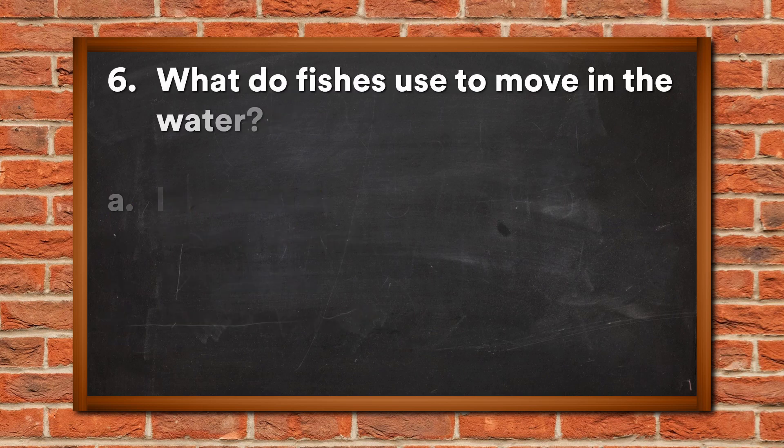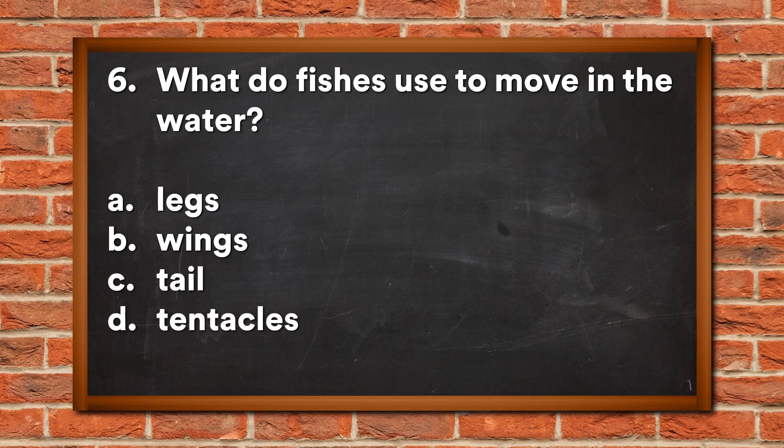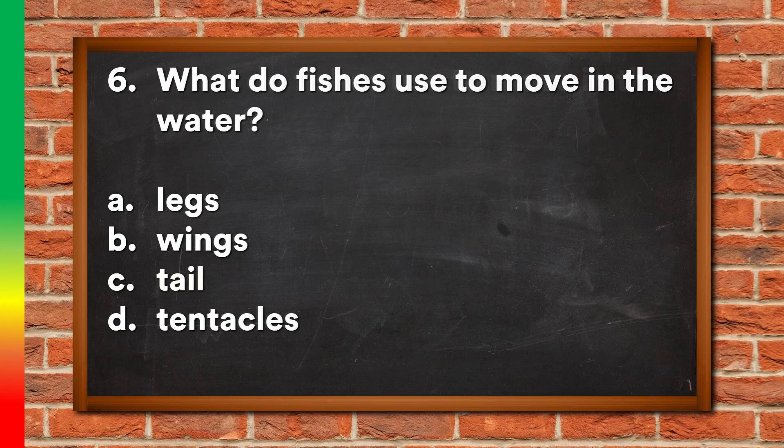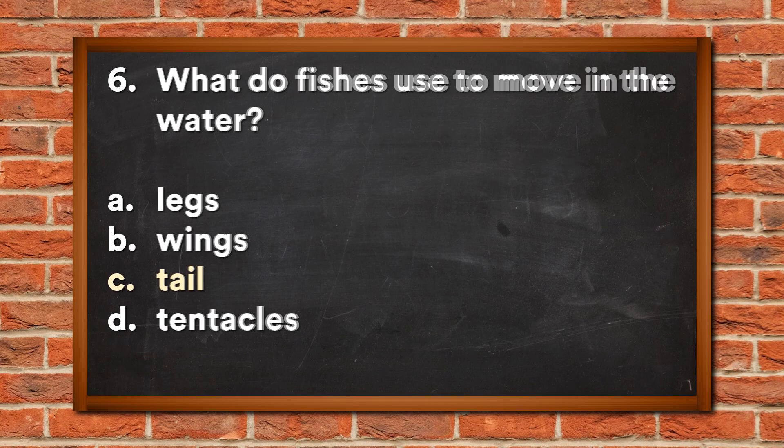Question 6: What do fishes use to move in the water? A. Legs, B. Wings, C. Tails, D. Tentacles. The answer is C, Tail.